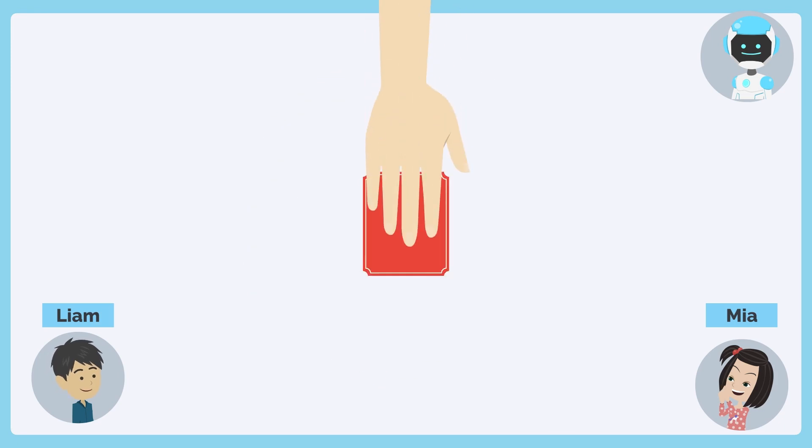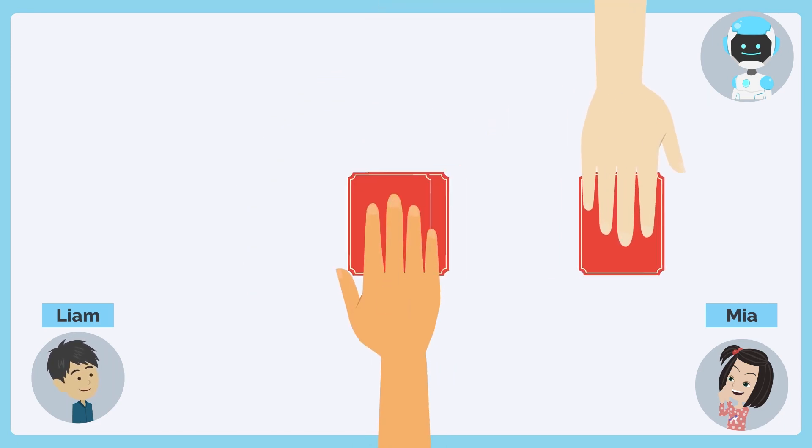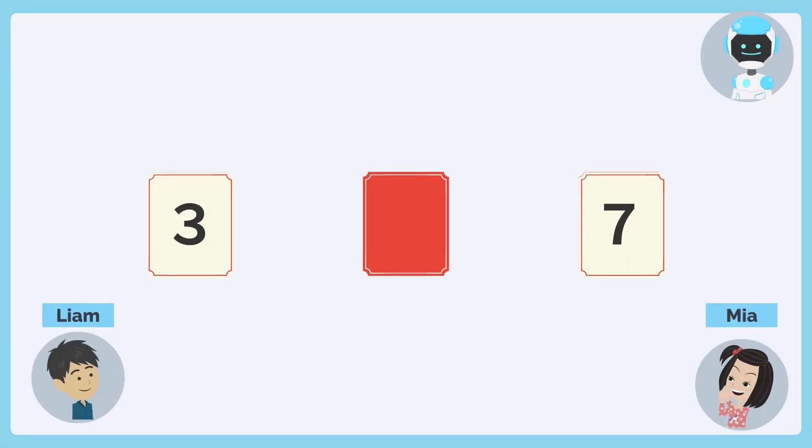Then two players choose one of the cards each and turn them over. The player who picked the card with the larger number on it wins. That sounds interesting. Okay, let's try.